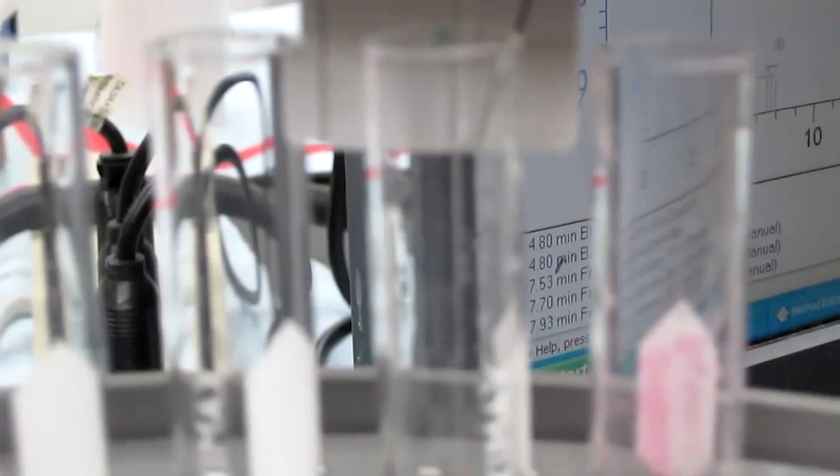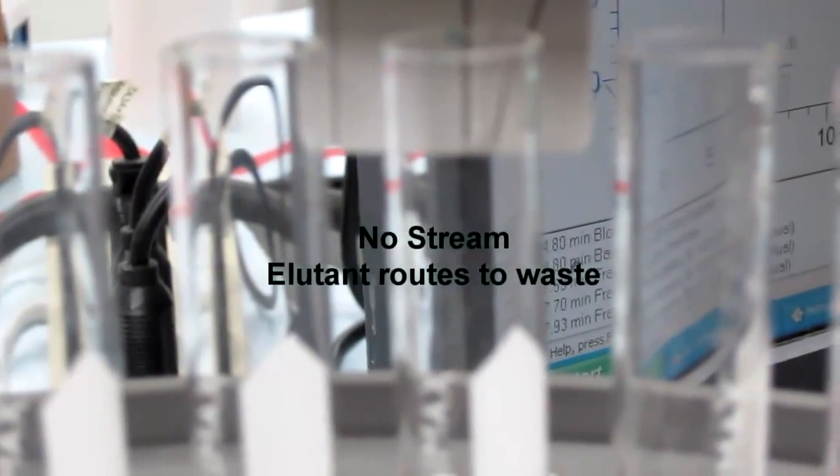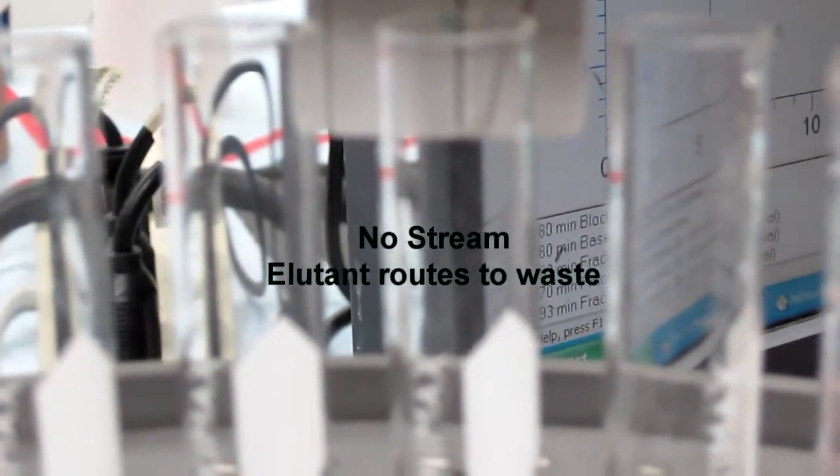Inserting a zero in the message box will stop collection and reroute the eluent back into the waste. However, the fraction collector will change test tube, it just won't output any eluent into the test tube. Until, of course, you insert a positive number back into the message box, in which the fraction collector will start collecting again into the current test tube.